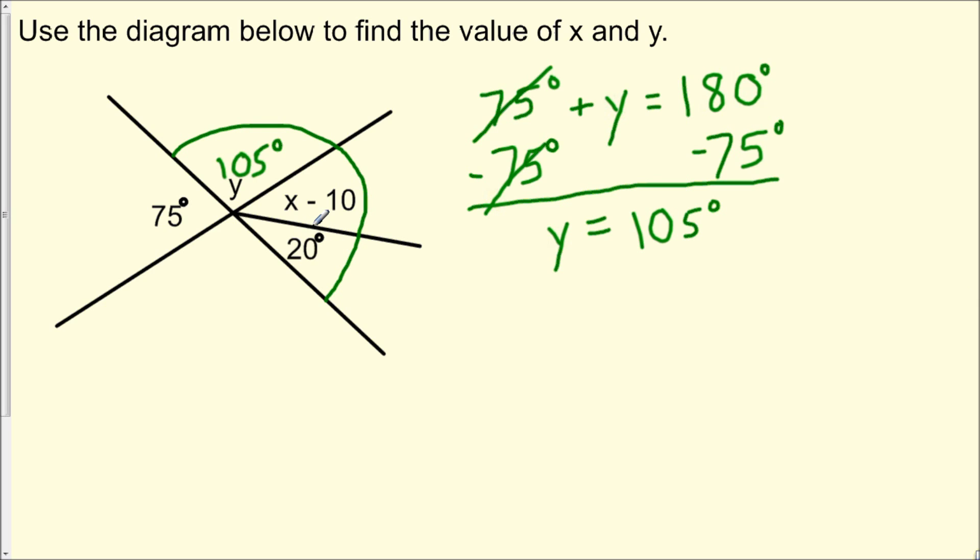But together, these three angles build another straight line. So what we could do is add these three angles together and set that equal to 180 degrees. So what equation we could set up? We could set up 105 degrees plus x minus 10 plus 20 degrees equals 180 degrees.